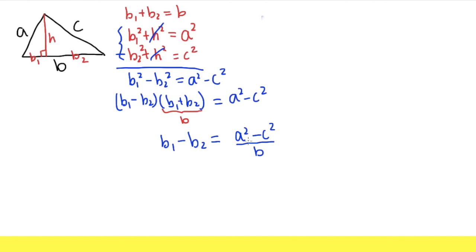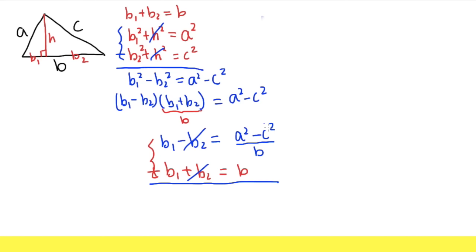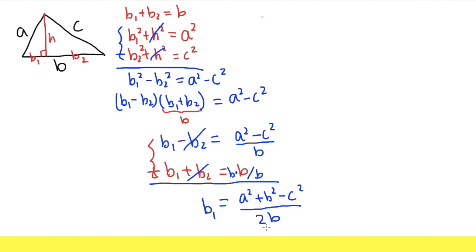The right-hand side is already in terms of A, B, and C. We can do better by combining this with B1 + B2 = B. Getting a common denominator, we add the equations: 2B1 = (B² + A² - C²) / B, so B1 = (A² + B² - C²) / (2B). That's what we have for B1.